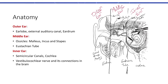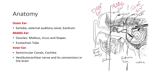The ear consists of the outer ear, middle ear, and inner ear. The outer ear consists of the earlobe — that's the portion of the ear that we all see. Beyond the earlobe there's the external auditory canal, and then there's the eardrum. That's the outer ear.